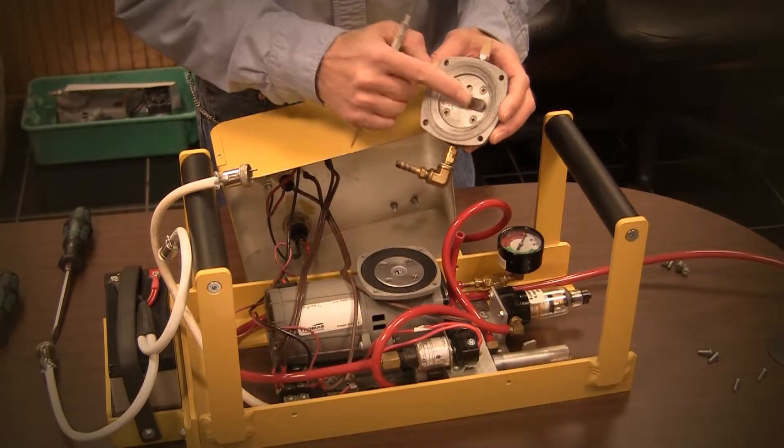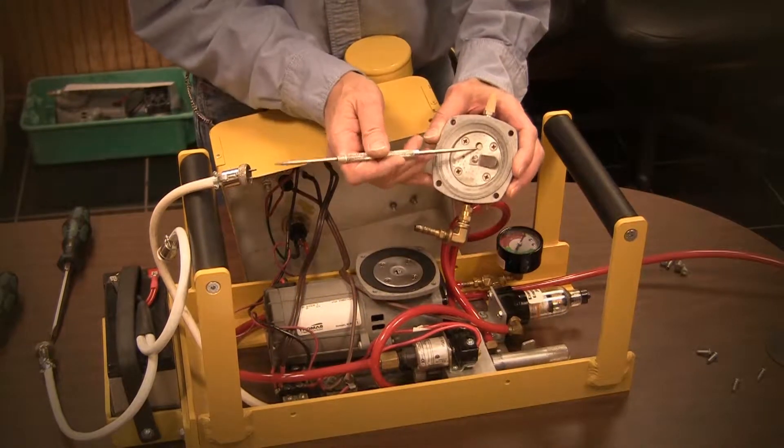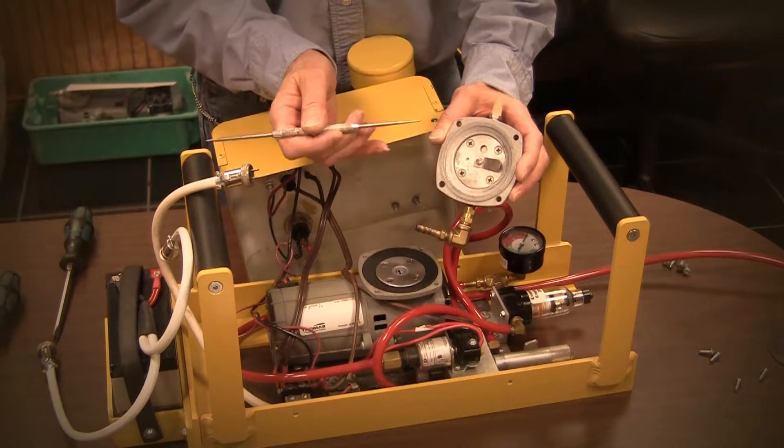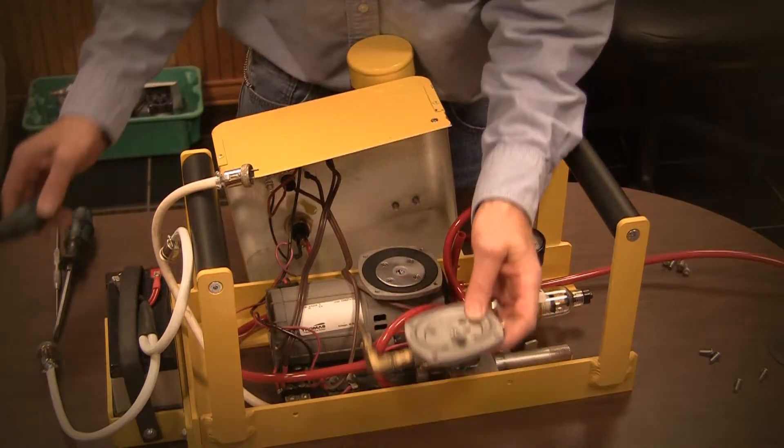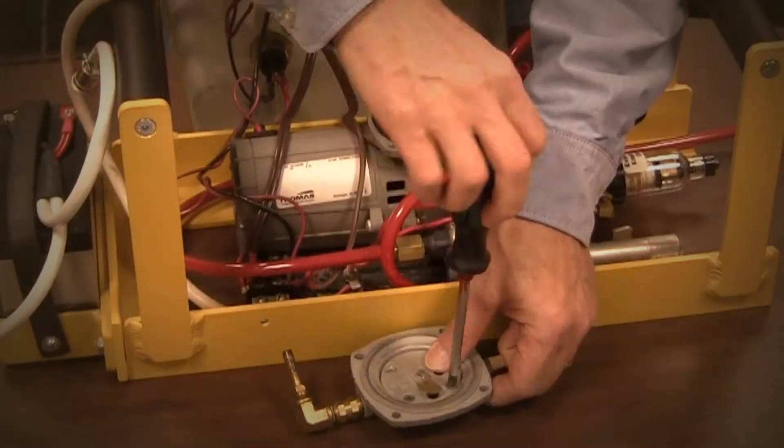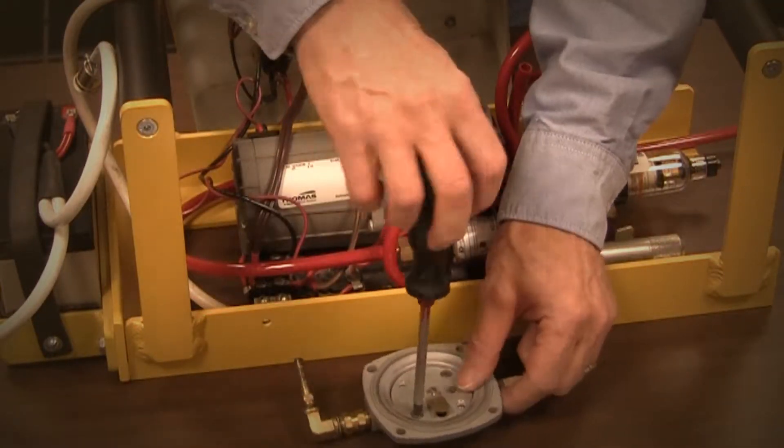The two flap valves are located on the valve plate, one on the outside and one on the inside. To access the inside flap valve, the plate must be removed from the pump head.